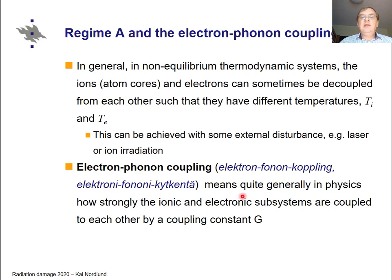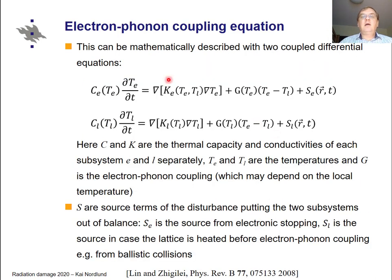The term electron-phonon coupling refers to how the ionic and electronic subsystems are coupled together with some coupling constant g. Two coupled differential equations describe this: C is the thermal capacity, K is the thermal conductivity, either for the electrons or for the lattice ions; T_e and T_i are the electron and ion temperatures; and g is the coupling constant, which is proportional to the difference between the electron and ion temperatures. There is also a source term — for laser irradiation this is typically a source for the electrons, and for ion collision cascades it can be a source for the lattice.